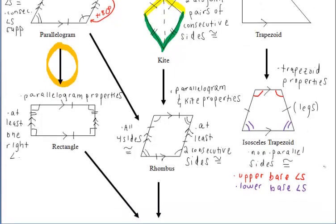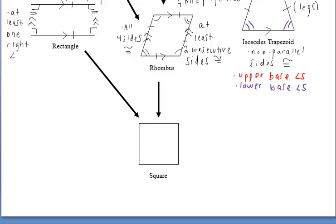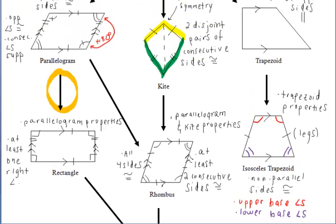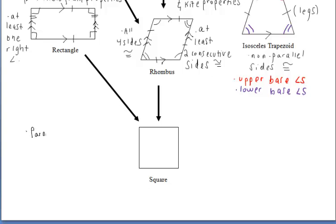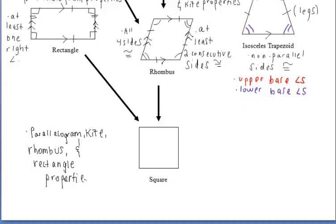Moving on to our final shape — the square. The square is the most detailed and complex shape on the flowchart. It has arrows coming from both the rectangle and the rhombus, and tracing further back, from the parallelogram and kite as well. Both pairs of opposite sides are parallel, all four sides are congruent just like the rhombus, and all four angles are right angles just like the rectangle. Essentially, the square is both a rectangle and a rhombus.